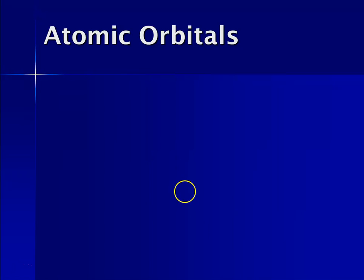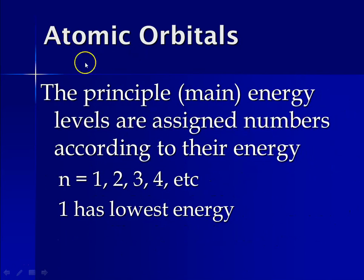These fuzzy cloud regions that we refer to are what we call atomic orbitals. The atomic orbitals are the locations where you're likely to find an electron outside of an atom's nucleus. They go through a series of names and numbers, and those little addresses tell you exactly where the electron is in space.